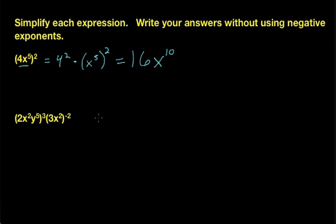Let's see how you did. The first thing we're going to do is take this product inside the parentheses and distribute this exponent — the 3. We're going to raise 2 to the third power, x squared to the third power, and y to the fifth power raised to the third power.